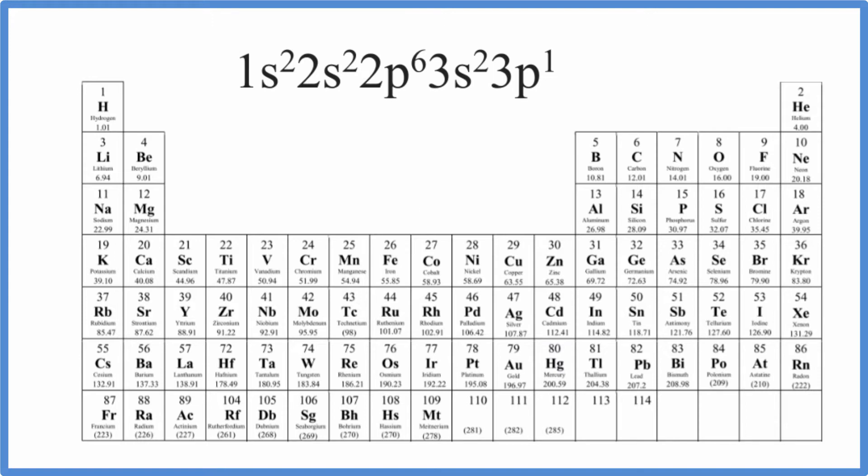The first, we can just count up the electrons. We have 2, 4, 6, 2, and 1. If we count that all up, that equals 13. So we know that we have 13 electrons.